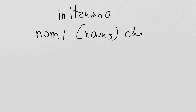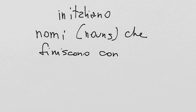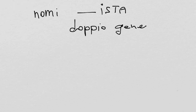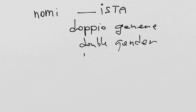In Italiano, nomi che finiscono con -ista. Nomi means nouns. So we are looking at nouns that in Italian end with -ista. These nouns have a double gender, which means that they identify and designate both a masculine or a feminine entity.